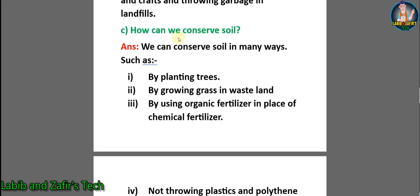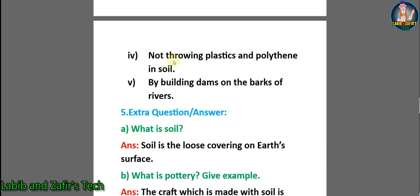Now C: how can we conserve soil? Answer: we can conserve soil in many ways, such as — 1. by planting trees, 2. by growing grass in wasteland, 3. by using organic fertilizer in place of chemical fertilizer, 4. not throwing plastics and polythene in soil, 5. by building dams on the banks of rivers.